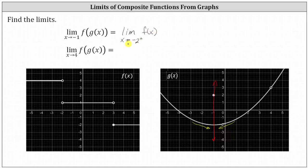We're switching back to x here because the outputs or y values of g of x, the inner function, become the inputs or x values of the outer function f of x. Now we use the graph of f of x to determine the one-sided limit.